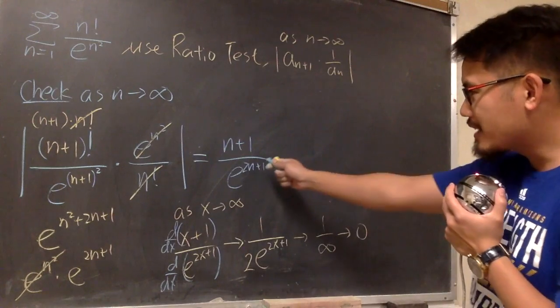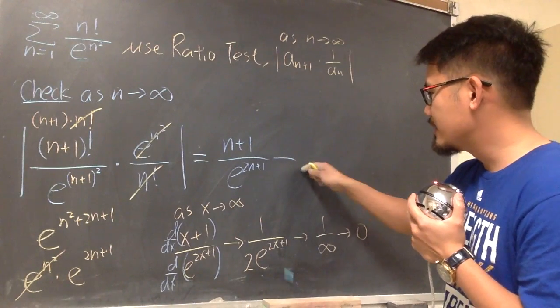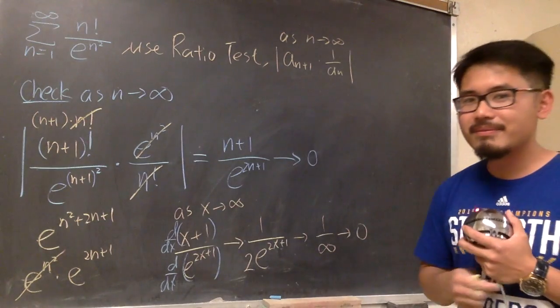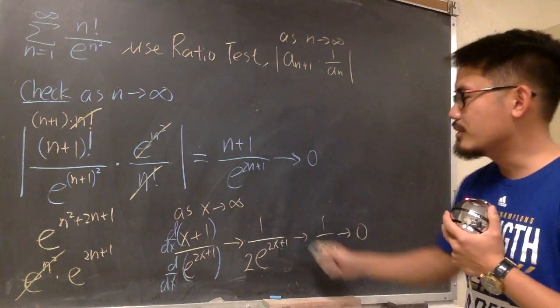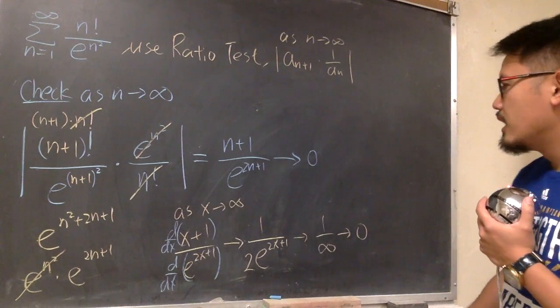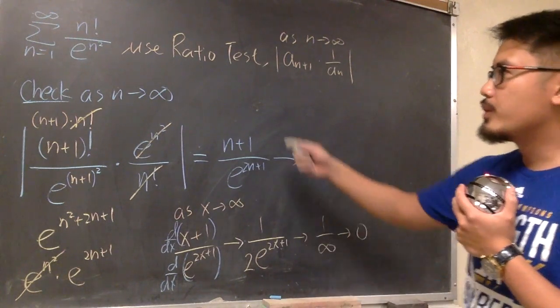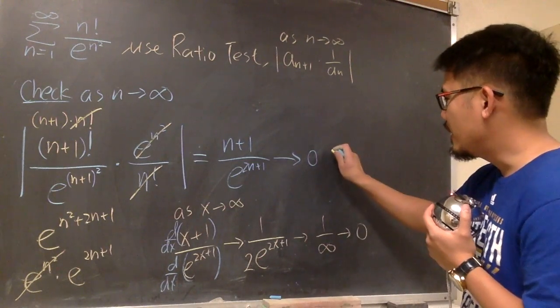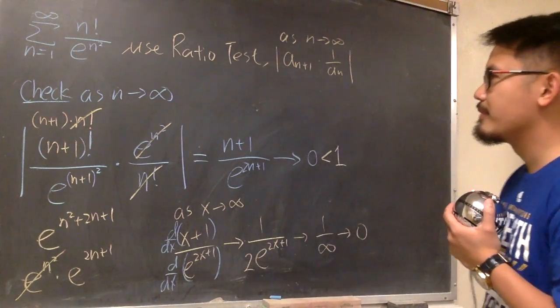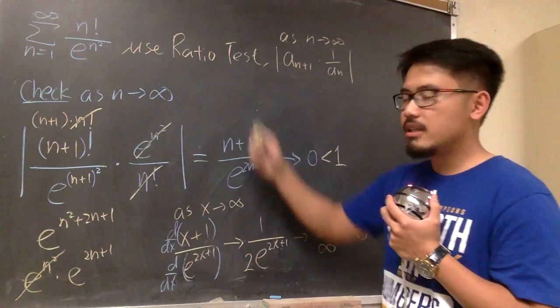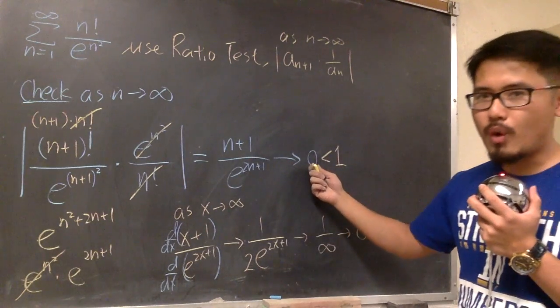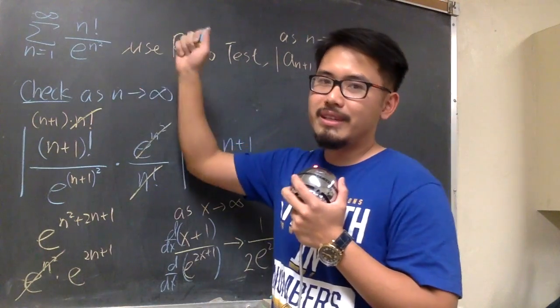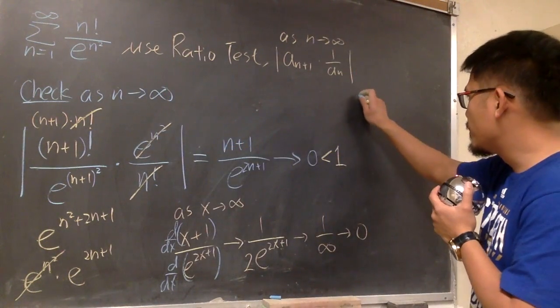So, we can go back here and say that this is approaching to 0, right, this right here, approaching to 0, we show the work right here. 0, when we are doing the ratio test, is this useful? Yes, it is. This is less than 1. And, when we have a ratio test, if the limit turned out to be less than 1, that's good, because we can say the original converges. So, here will be the conclusion.